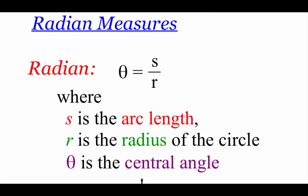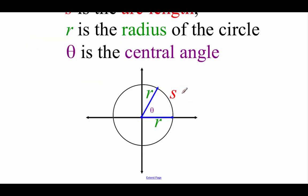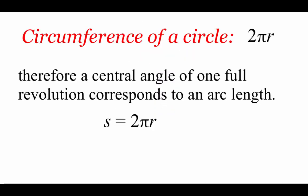There are two different ways to measure angles, and we're going to start by looking at radian measures. In order to find the radian measure, we use the formula theta equals s divided by r. That s value stands for an arc length — we're looking at a circle intercepted by the angle we're examining. r is the radius of our circle, and theta is the central angle. We know that to find the circumference of a circle, we take 2π times r. If we're looking at a central angle that corresponds to one full revolution, the arc length equals the circumference, so s equals 2π times r.